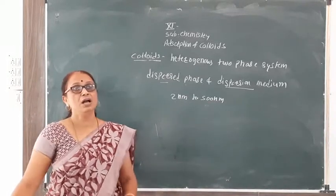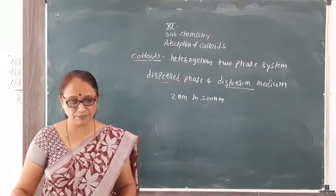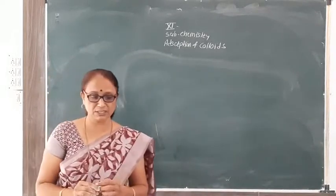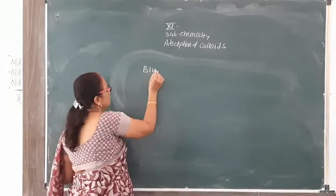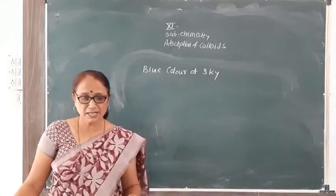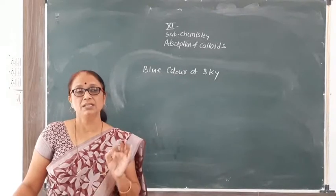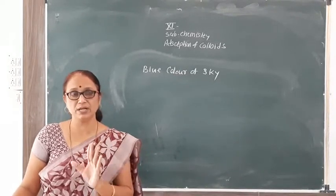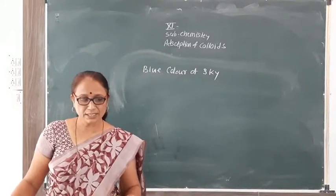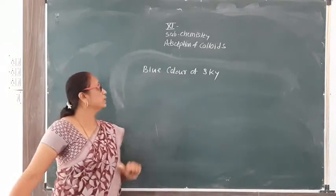Thus, colloidal solution or colloidal dispersion is a heterogeneous system of two phases — dispersed phase and dispersion medium. One example of colloids is the blue color of the sky. In the atmosphere there are tiny dust particles along with minute water droplets. These colloidal particles scatter the blue light, and hence the color of the sky appears blue.